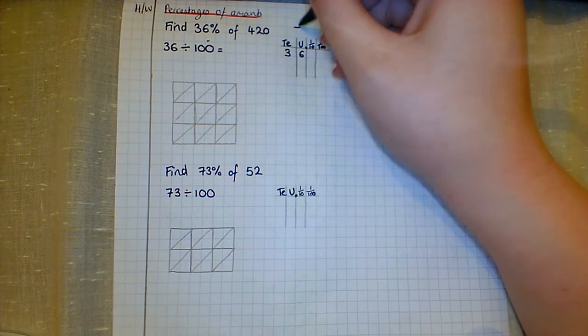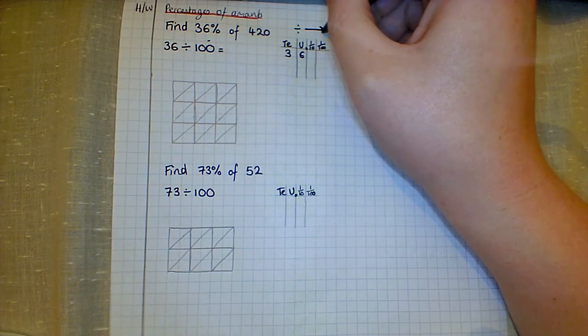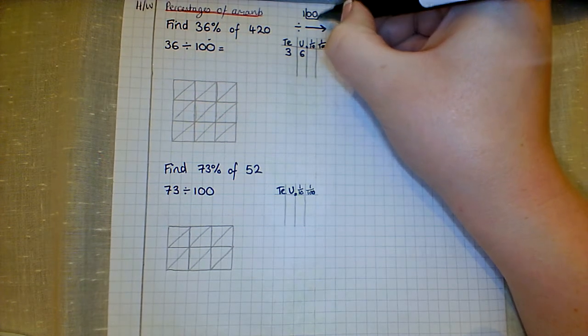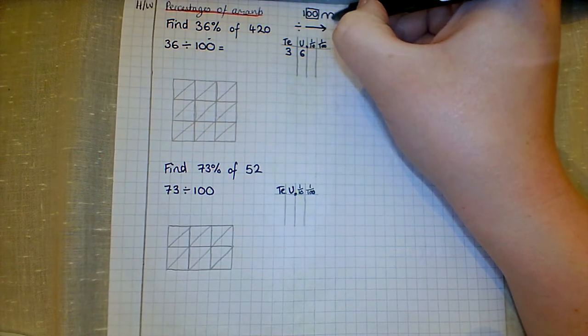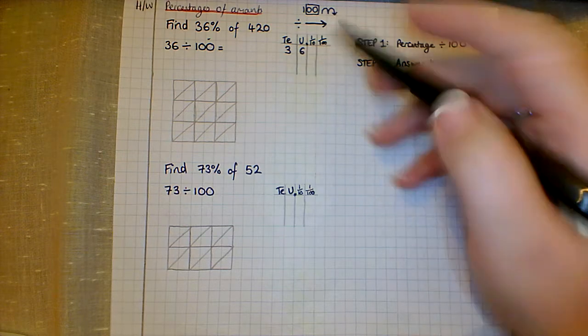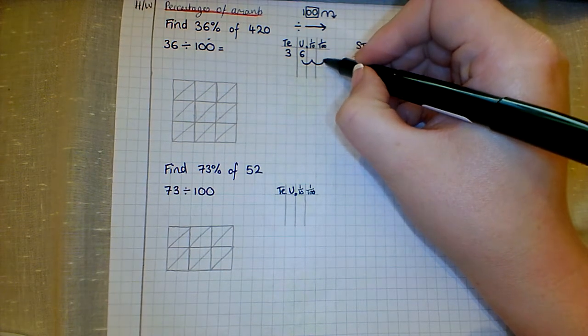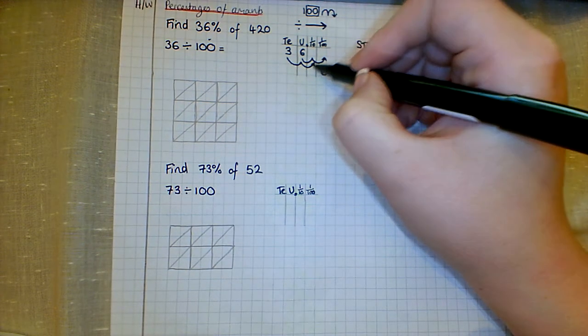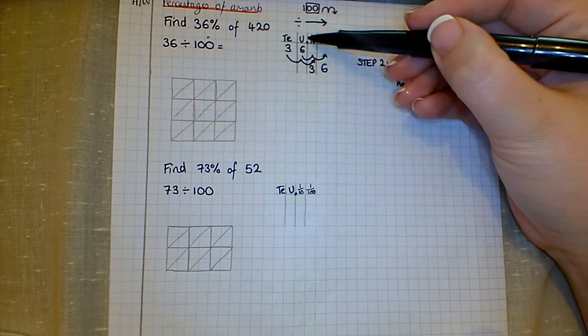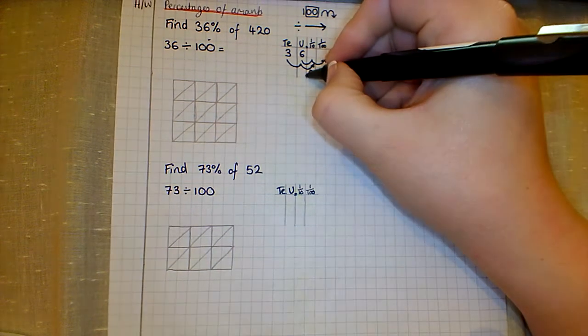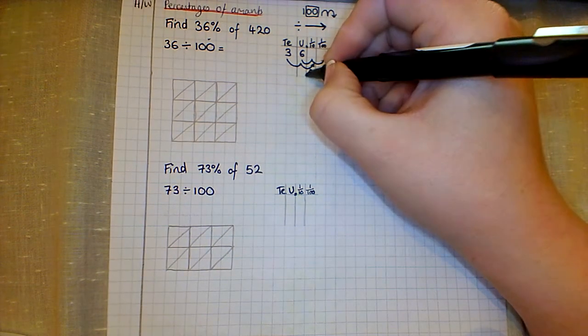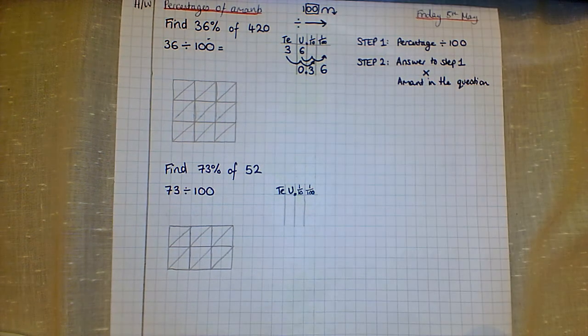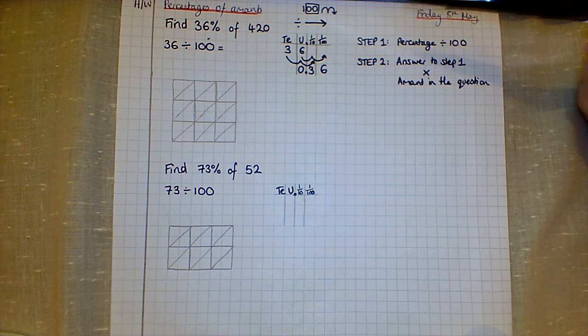If I'm dividing by 100, which has two zeros in it, when we divide we're going to move to the right two spaces. Every number in every column is going to move two spaces right, so one, two - the 6 ends up in this column, and one, two - the 3 ends up here. Remember this line between my units and tens is my decimal point line. The last thing I need is an emergency zero because we don't say point 36, we say 0.36, so I'll pop that zero in. I've done step one for this question.